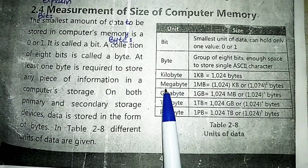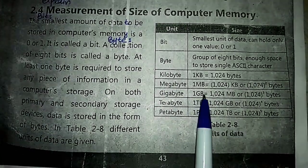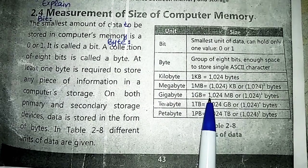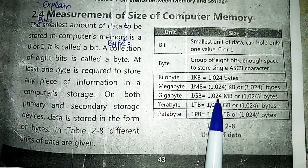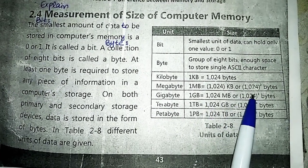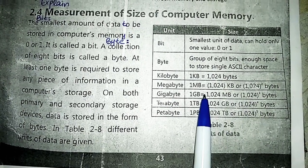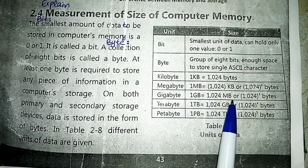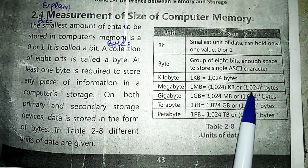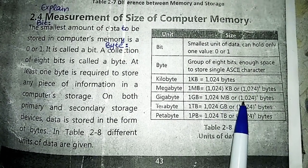Next is gigabyte. Gigabyte is represented by GB. In one gigabyte there are 1,024 megabytes, which equals 1,024 power 3 bytes. Since megabyte was expressed as 1,024 power 2, multiplying by another 1,024 gives us power 3.